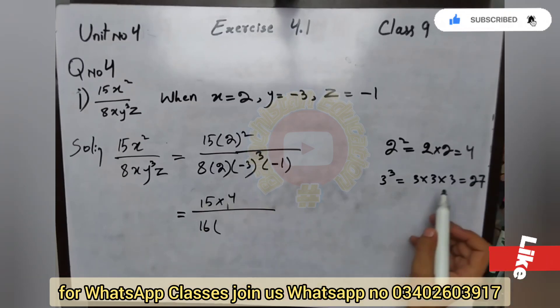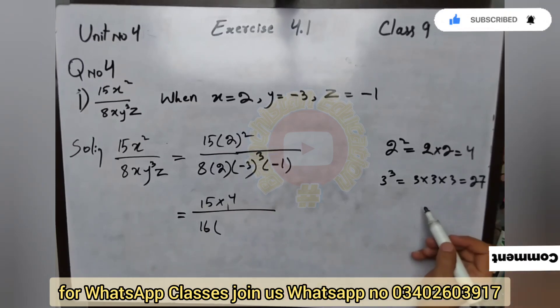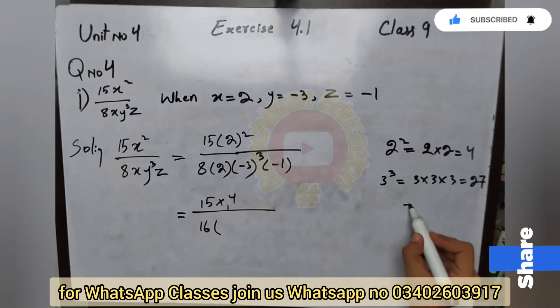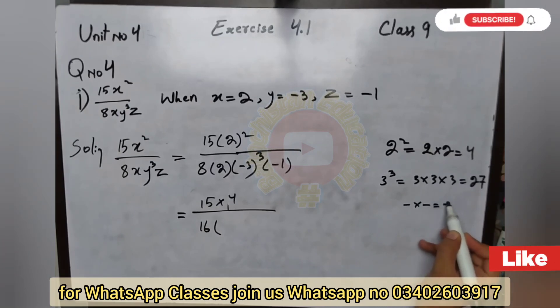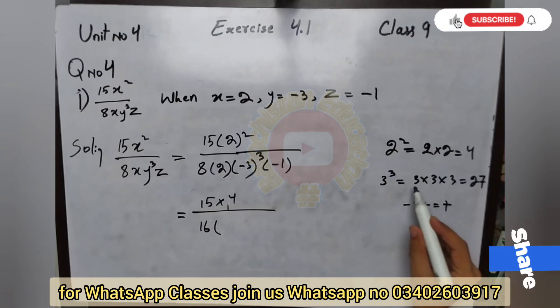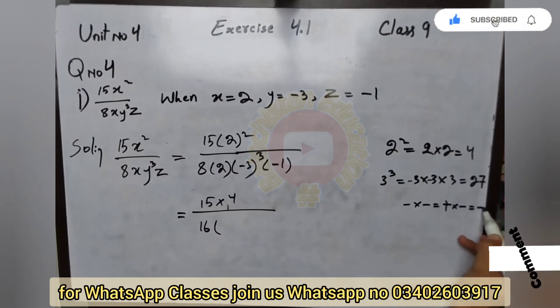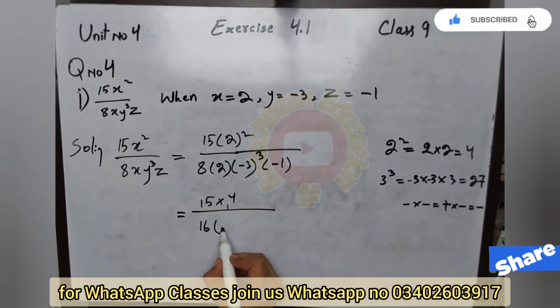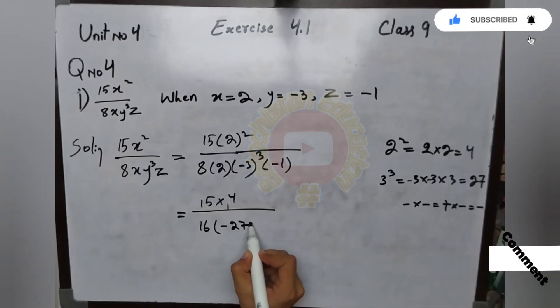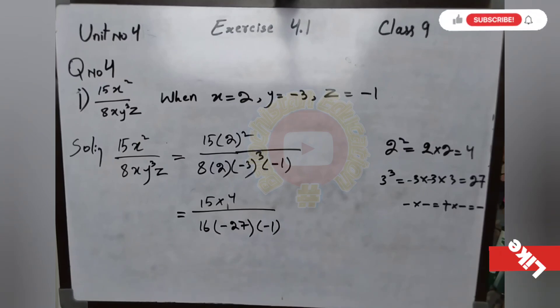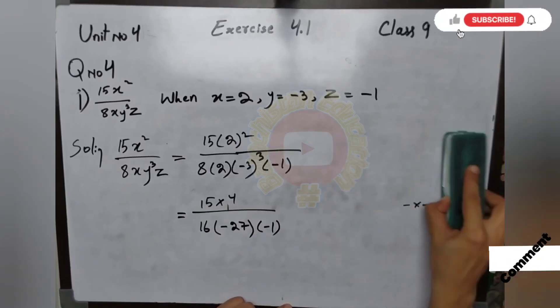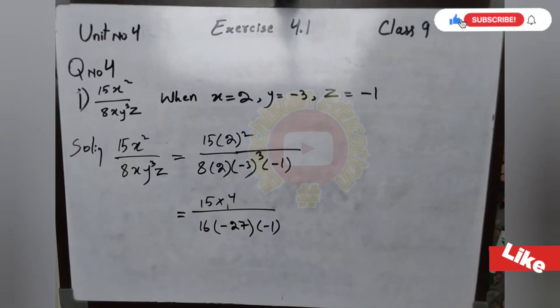Since this is negative and the power is cube, minus multiplied by minus equals plus. So two times minus. This minus, that minus. Then plus multiplied by minus equals minus. So the answer will be negative 27 multiplied by minus 1.